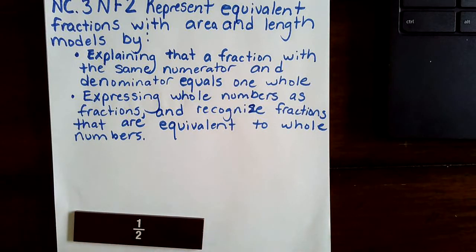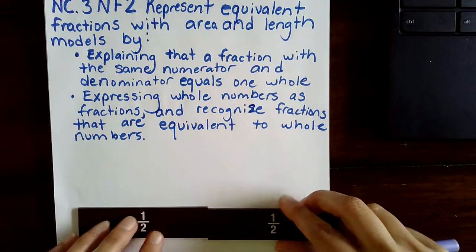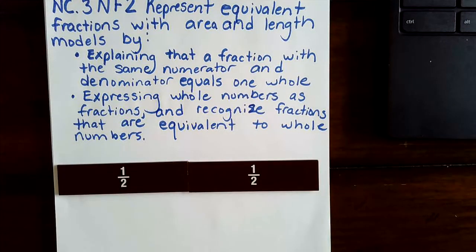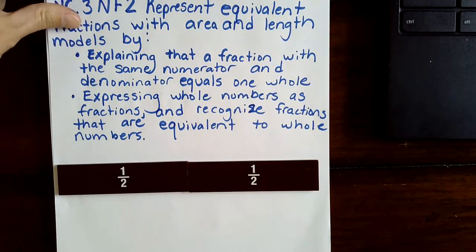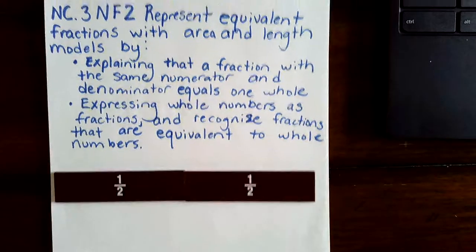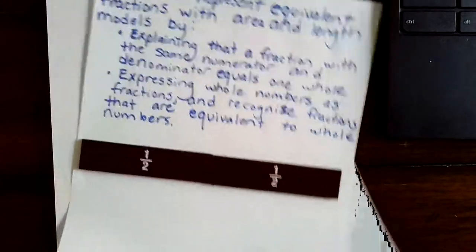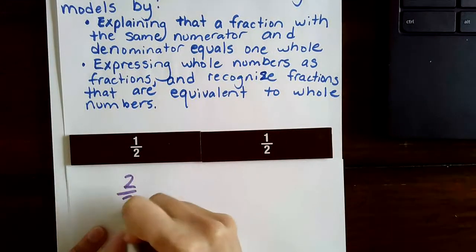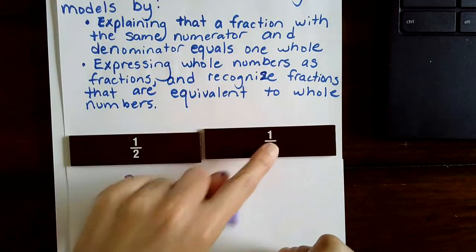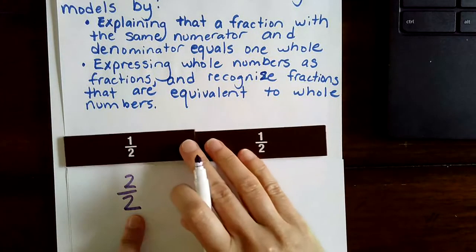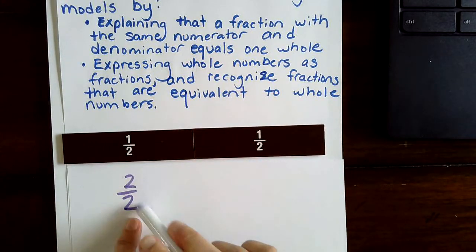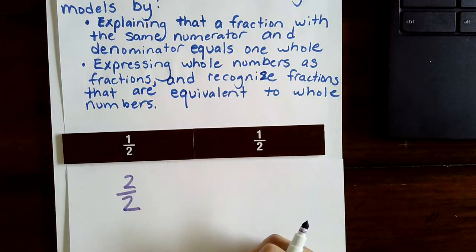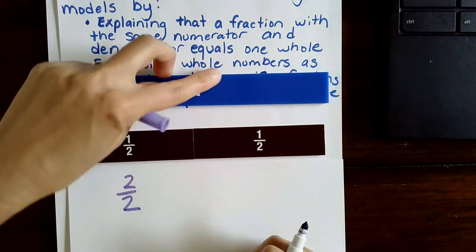We have two halves. That looks like this, and we write it like – move this out of the way. We write it like this – two halves. One half plus one half is two halves. So when the numerator and denominator are the same, that's the same as one whole.